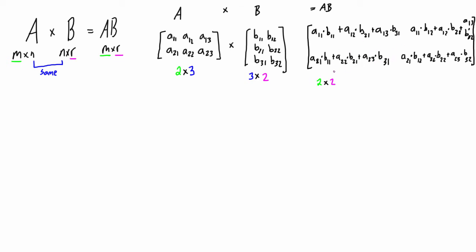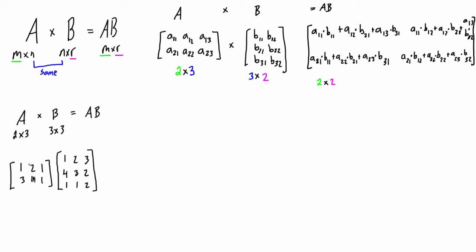Now let's work through an actual example with real numbers. We have a two by three matrix times a three by three matrix. We check that the number of columns of the first equals the number of rows of the second — that's good, they're both three. So we can proceed, and the resulting matrix will be two rows by three columns — a two by three matrix.